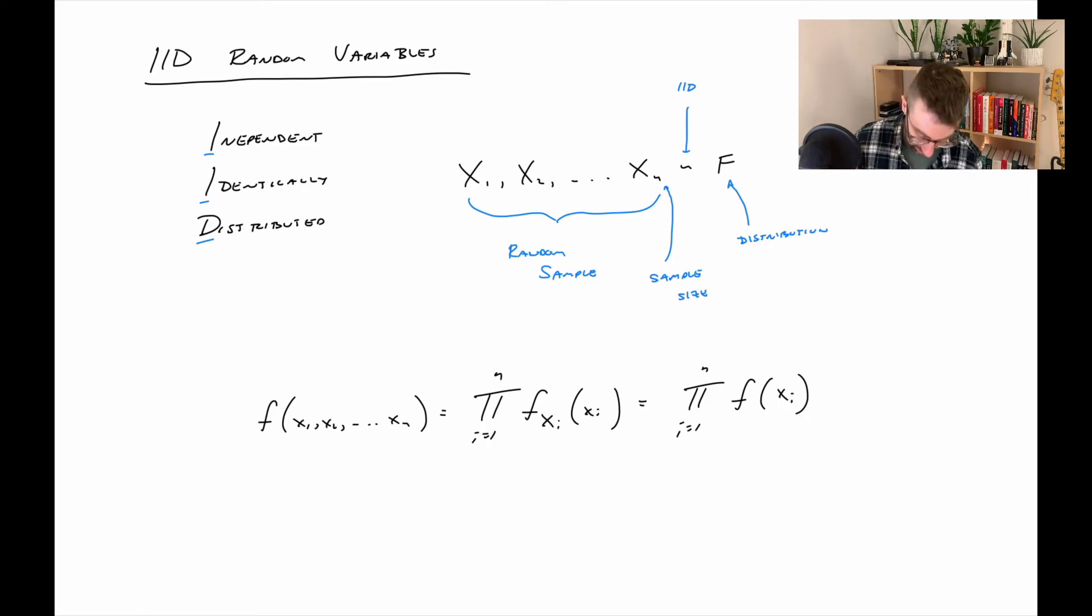When you have IID random variables, the joint distribution is very easy to work with because of the independence. We can multiply together each of the marginal distributions. But then better yet, because of the identical nature of them all having the same marginal, it's not a different one each time, it's the same one each time. And then this product of all those marginals becomes very easy to work with.